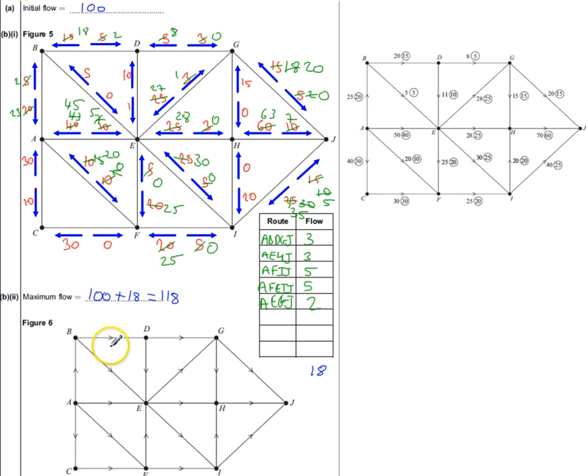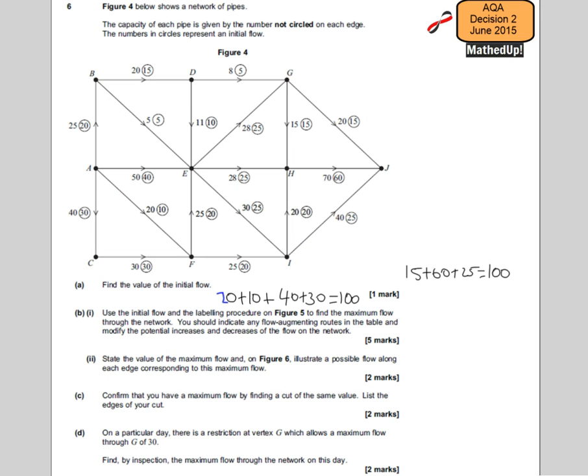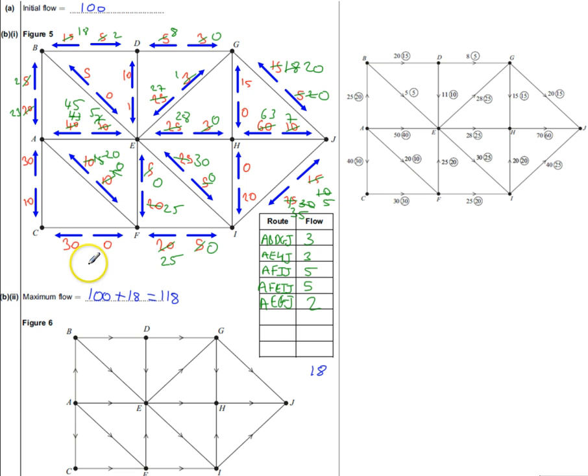I can now record everything onto Figure 6. This is part 2, it says take the value of the maximum flow and on Figure 6 illustrate a possible flow along each edge corresponding to this maximum flow. From A to C I've got 30, A to B is 23, A to E is 45, A to F is 20.